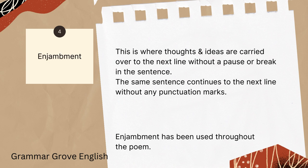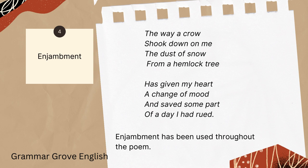Lastly, we have enjambment. It is a literary device wherein thoughts and ideas are carried over to the next line without any pause. In enjambment, we keep continuing a sentence in the next line without using any punctuation sign — without a full stop or a semicolon. It has been used all throughout the poem: 'The way a crow shook down on me the dust of snow from a hemlock tree has given my heart a change of mood and saved some part of a day I had rued.' There is no comma, no semicolon, no full stop in between — only at the very last line. This is a case of enjambment.